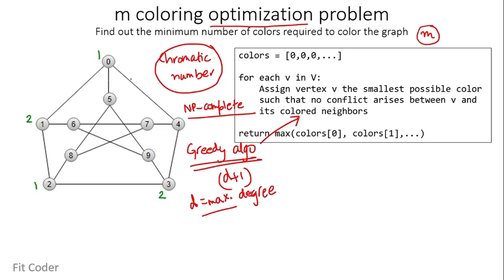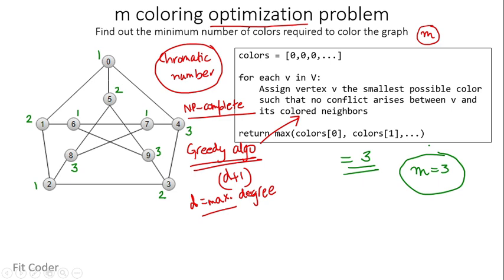At vertex 4, neighbors have colors 1 and 2, so the smallest color is 3. At vertex 5, the neighbor has color 1, so we assign 2. Vertex 6 gets color 1. Vertex 7 gets color 1. At vertex 8, colors 1 and 2 are assigned to neighbors, so we assign 3. At vertex 9, colors 1 and 2 are assigned to neighbors, so we assign 3. We return the maximum color, which is 3 — the number of colors required.